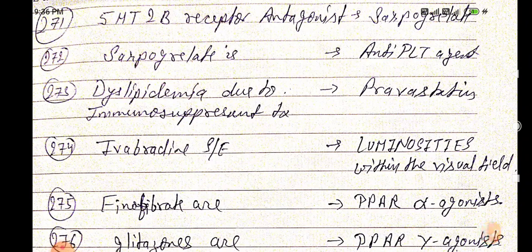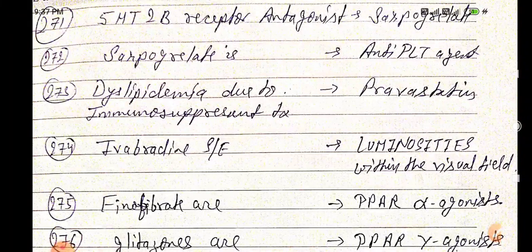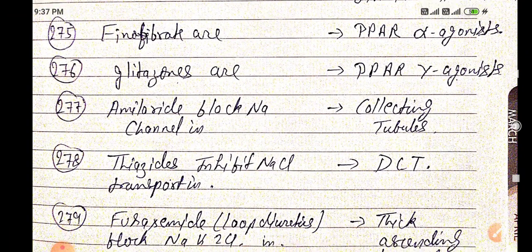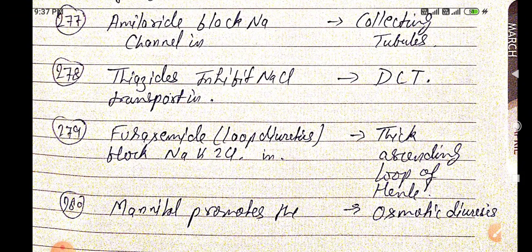Quick recap: 5-HT2B receptor antagonist is serpogrelate — antiplatelet. Dyslipidemia from immunosuppressants — pravastatin. Evobladin side effect — luminosities in the visual field. Phenofibrates — PPAR alpha agonist. Glitazones — PPAR gamma agonist. Amiloride blocks sodium in collecting tubules. Thiazides inhibit sodium chloride in DCT. Furosemide blocks sodium-potassium-chloride in the ascending loop of Henle. Mannitol promotes osmotic diuresis.